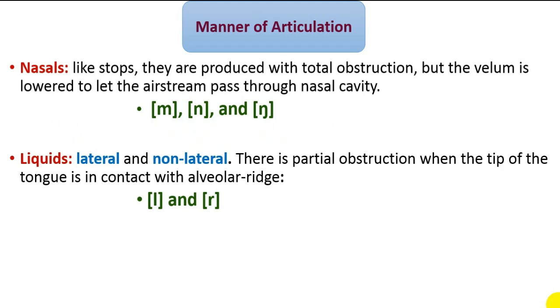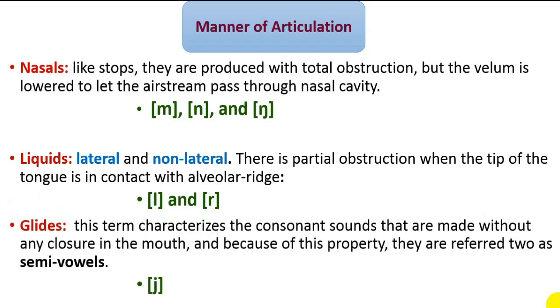Liquids are consonant sounds whose production involves partial obstruction when the tip of the tongue is in contact with the alveolar ridge. Glides characterize consonant sounds that are made without any closure in the mouth. Because of this property, they are referred to as semi-vowels, namely Y and W.